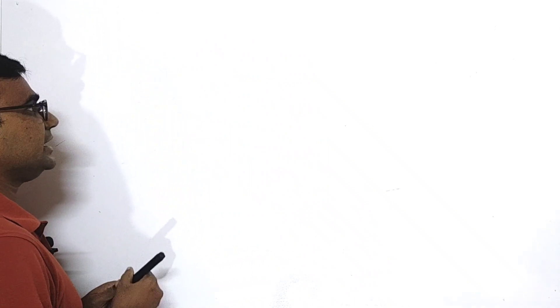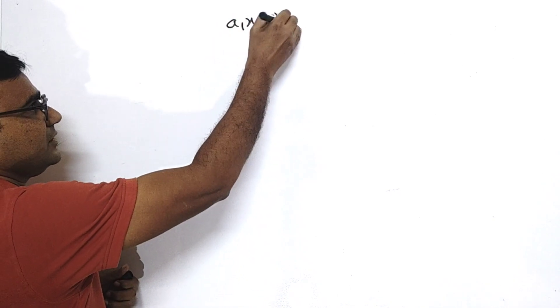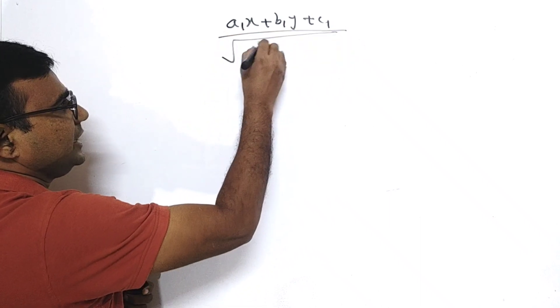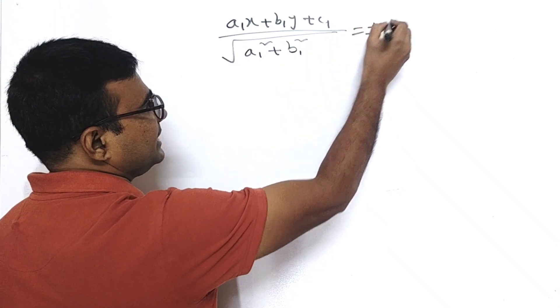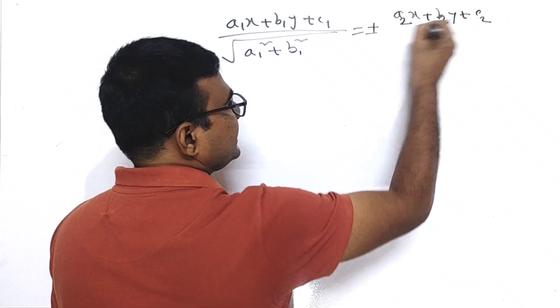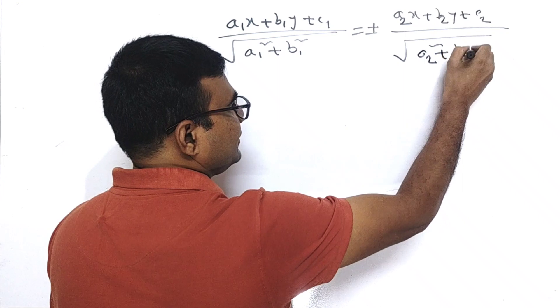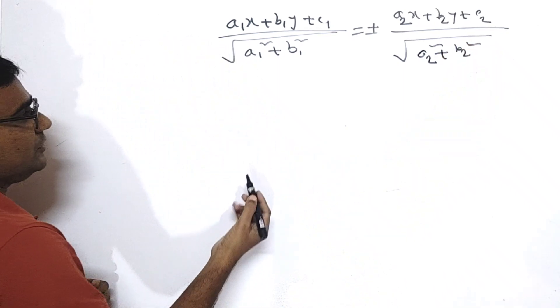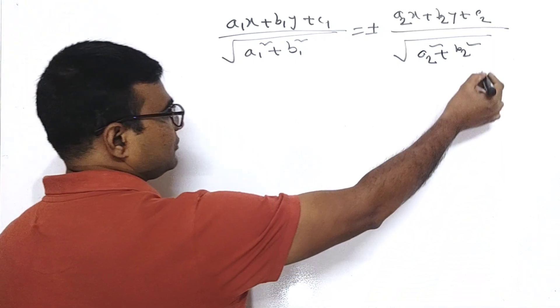Welcome. This is the third lesson. We are going to discuss how to solve equations — specifically, how to find the equation of the angle bisector between two lines.